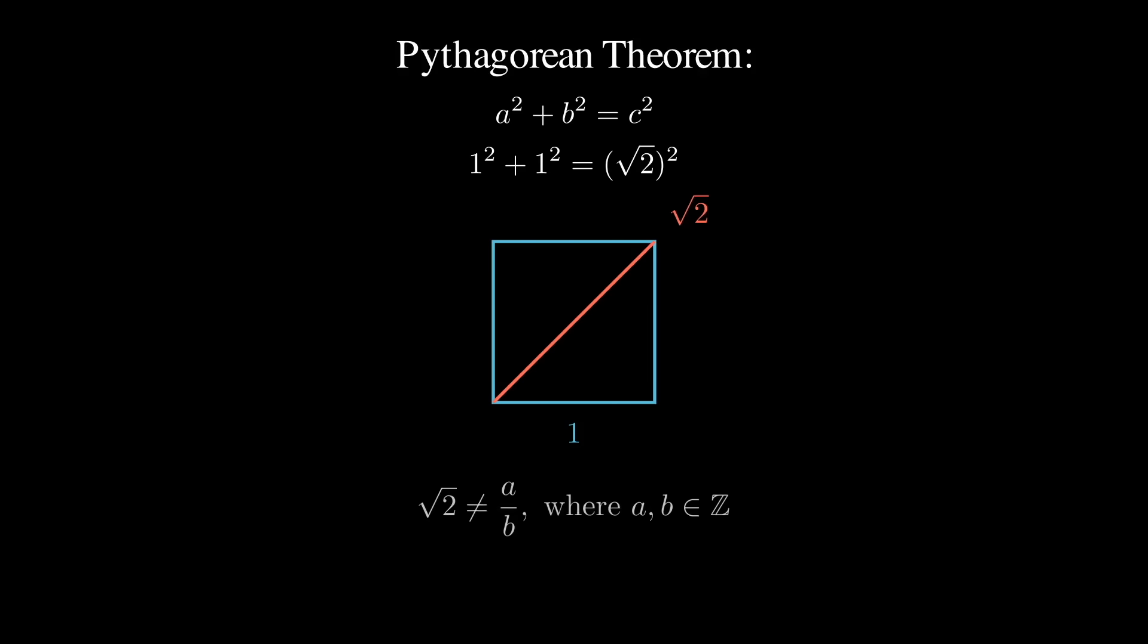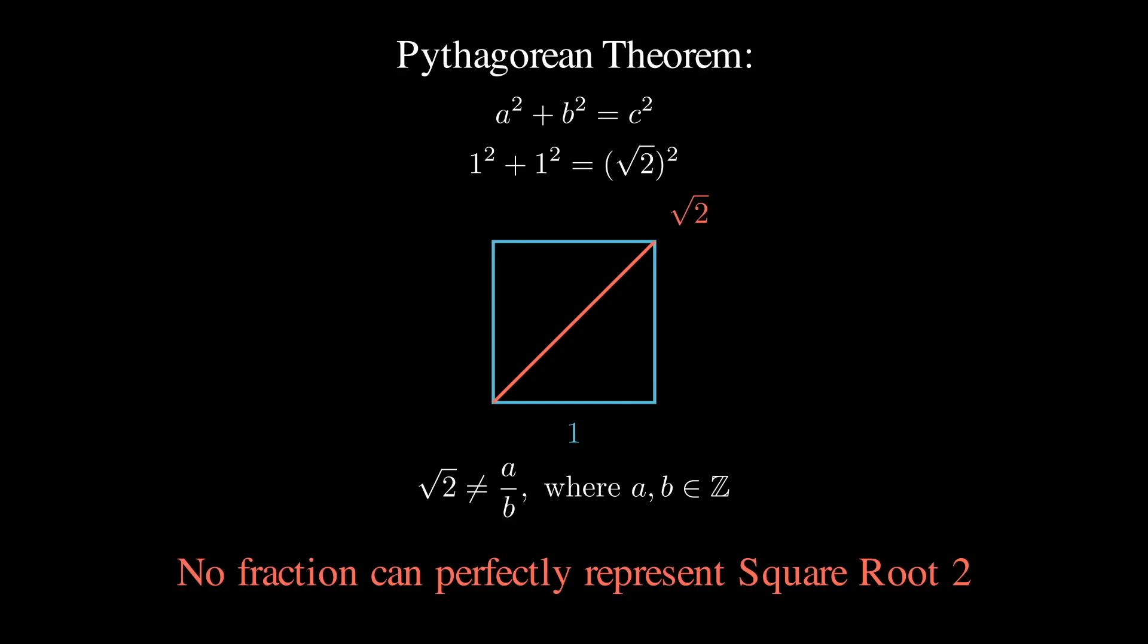The kicker being, no fraction could perfectly describe the square root of 2, which defied the belief that numbers could always be represented as ratios.